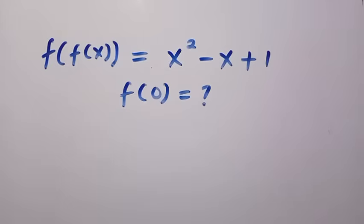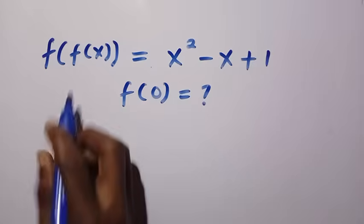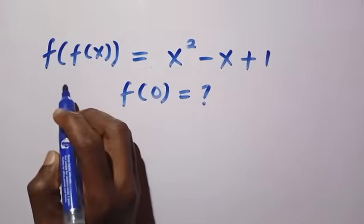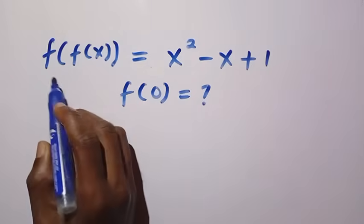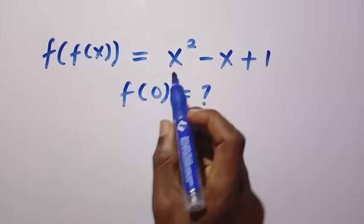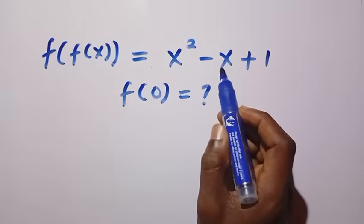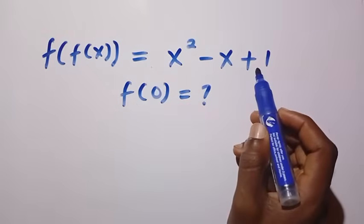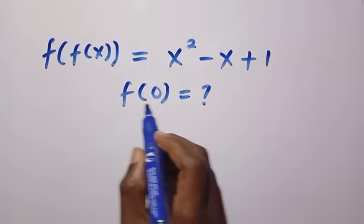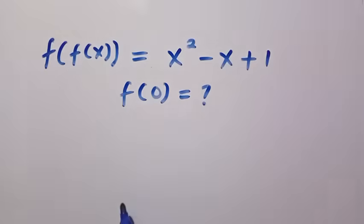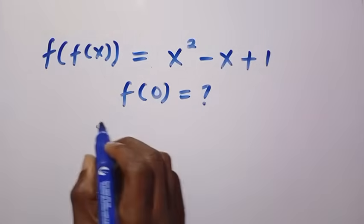Good day viewers, you are welcome. How to solve these nice functional equations? We have a function in other functions, which is a composite. f of f of x equals x squared minus x plus 1. And what is f of 0? So let's solve this problem quickly.